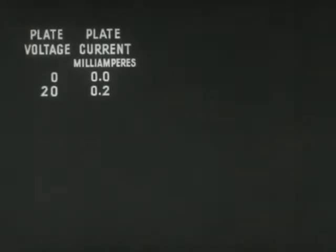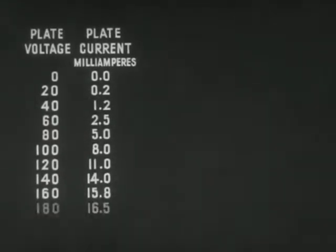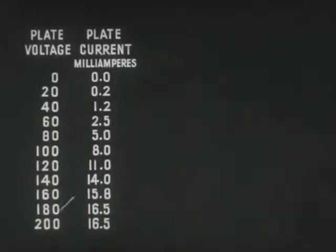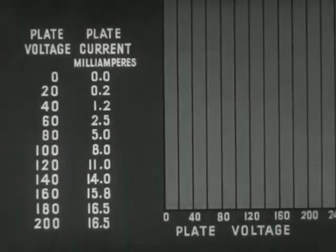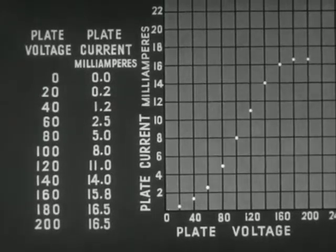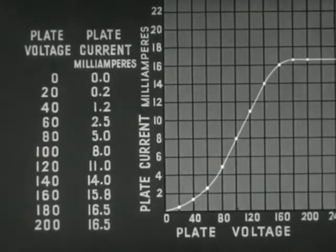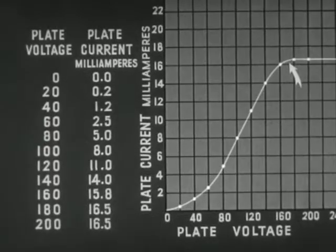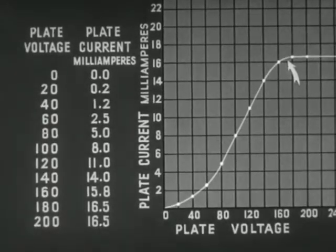If the voltage on the plate is increased, the plate current will increase since more electrons will be attracted because of the higher positive charge. With ordinates representing voltage and current, we can trace a curve to show this relationship. Note the saturation point beyond which there is no increase in the plate current even when the voltage is increased.